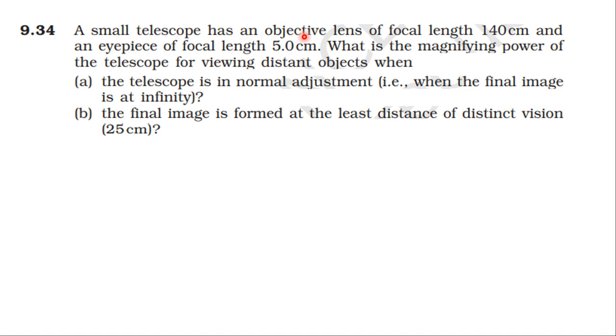A small telescope has an objective lens of focal length 140 cm and an eyepiece of focal length 5 cm. What is the magnifying power of the telescope for viewing distant objects when the telescope is in normal adjustment?